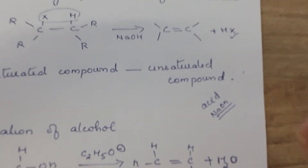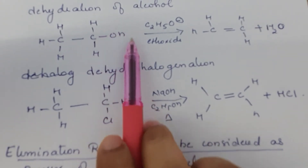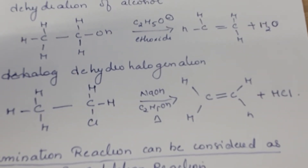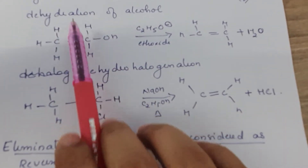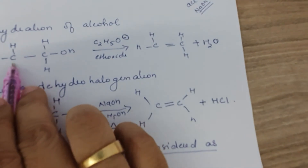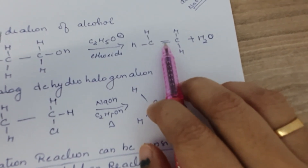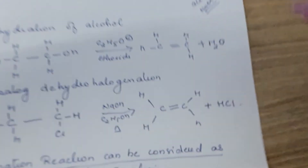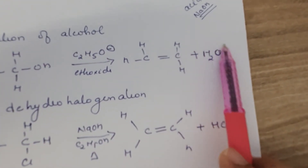During elimination, hydrogen leaves as H+ and two electrons are shared to form a multiple bond. Elimination normally happens in the presence of acid or base. Example: dehydration of alcohol. Alcohol is an organic compound with an OH group. When ethanol is treated with sodium hydroxide, the OH from the first carbon and hydrogen from the second carbon are removed as water, and a double bond is formed.